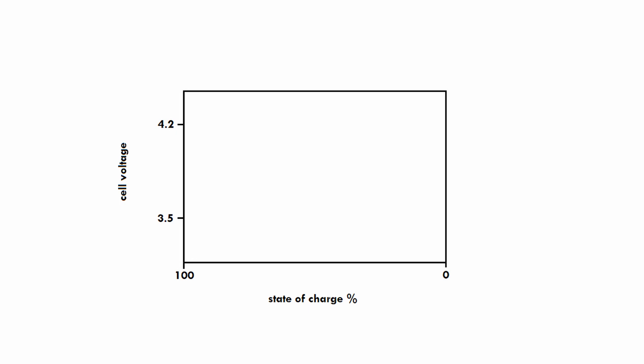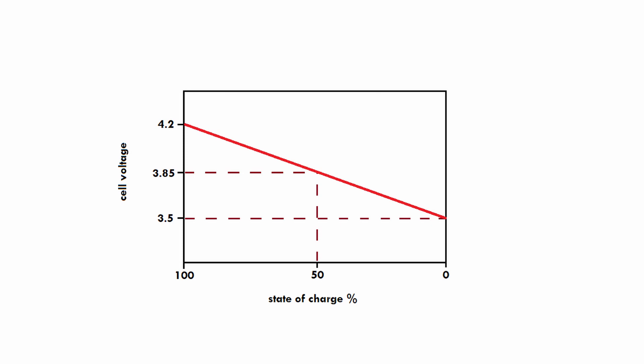The first way you might think of is using the voltage of the battery. Any kind of battery has a certain voltage when it's empty and a certain voltage when it's full. For instance, a car battery is about 10.5 volts when empty and 12.7 when full. A lithium-ion cell is about 3.5 volts when empty and 4.2 volts when full. So we can say 3.5 volts means 0% and 4.2 volts means 100%, and then linearly map between them — so 3.85 volts, exactly in the middle, would correspond to 50%.